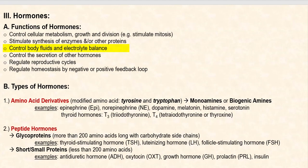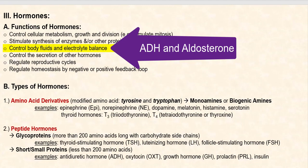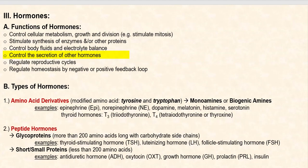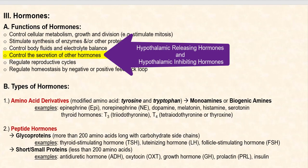The third function is they control bodily fluids and electrolyte balance. Examples of these hormones would be ADH, your antidiuretic hormone, and aldosterone. The fourth function is they control the secretion of other hormones. Examples would be your hypothalamic-releasing hormone and your hypothalamic-inhibiting hormone, something we will talk about in detail later on.